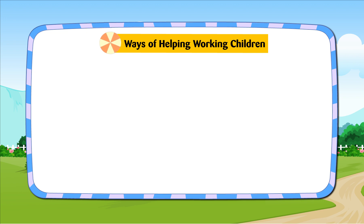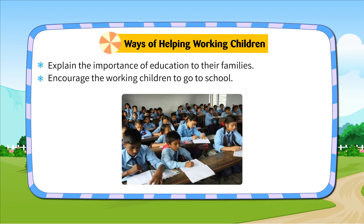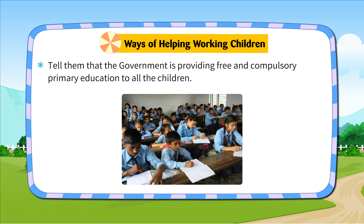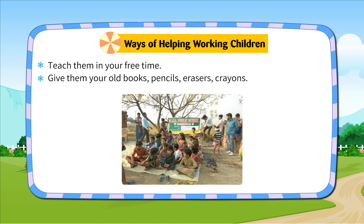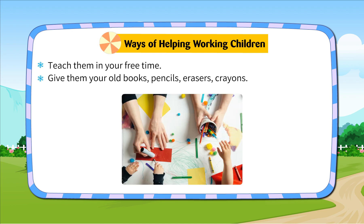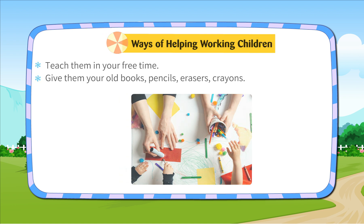Ways of helping working children: Explain the importance of education to their families. Encourage the working children to go to school. Tell them that the government is providing free and compulsory primary education to all the children. Teach them in your free time. Give them your old books, pencils, erasers and crayons.